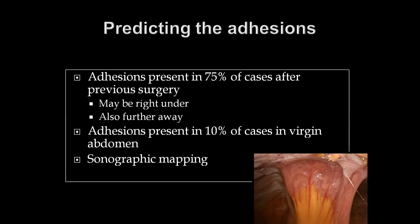We should be vigilant and able to predict the probability of adhesions in every case. Adhesions are present in 75% of cases after previous surgery and may be right under the scar or occasionally further away. Adhesions are also present in 10% of cases in a virgin abdomen. Although methods like sonographic mapping exist, the most important precaution in a patient with a previous midline scar is to avoid using the Veress needle. Consider using Hassan's cannula for safe peritoneal entry, or use an alternative site well away from the scar, namely Palmer's point.